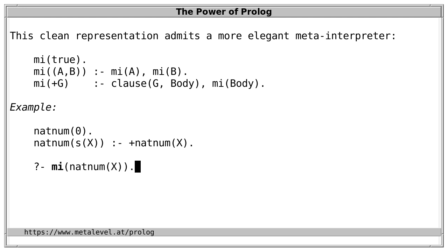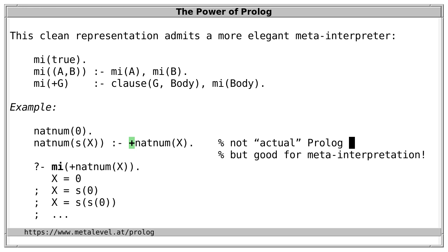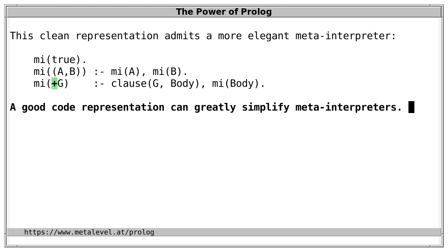By adding this predicate '+', we obtain a working Prolog program. Importantly, we can also use our meta-interpreter to run the goal. This is in a sense no longer actual Prolog syntax one would normally use for this program, due to the '+' we introduced, but it's not far removed and only takes one additional predicate to make it perfectly valid Prolog. It's very good for meta-interpretation because we no longer need the guards. A good representation of Prolog code can greatly simplify meta-interpreters.